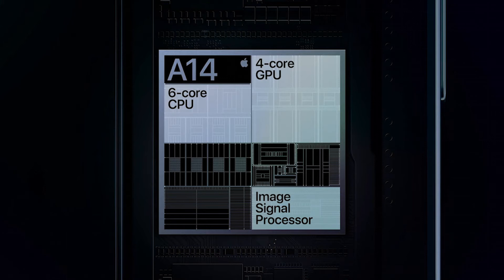With the 5nm process, there is less heat generated. That is the electrical definition of a nanometer. The GPU is a 4-core GPU, which is 30% faster in games.